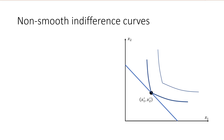We have studied the two-goods model assuming smooth and well-behaved preferences. A key conclusion was that an interior optimal solution would have to satisfy MRS equal to minus P1 over P2.